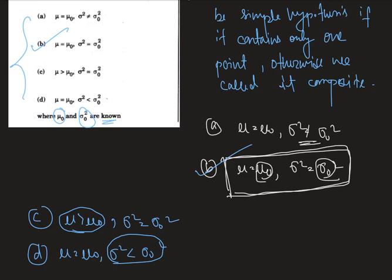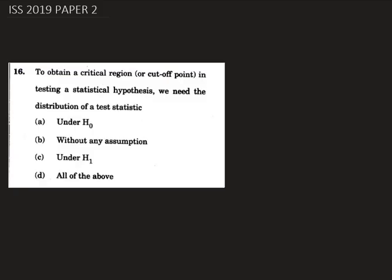Let's see another question. This is question number 16. In this question we are asked: to obtain the critical region or cutoff point in testing a statistical hypothesis, we need the distribution of the test statistic — whether it is without any assumption, under H₁, under H₀, or all of these. We need to find the correct one among the four options.